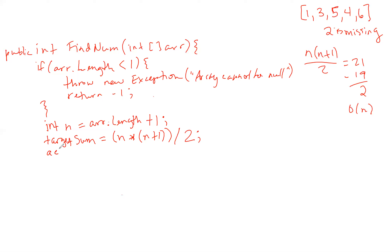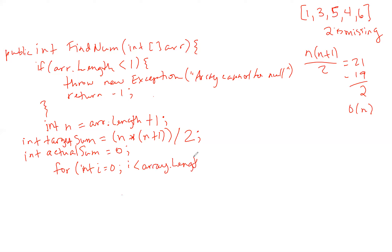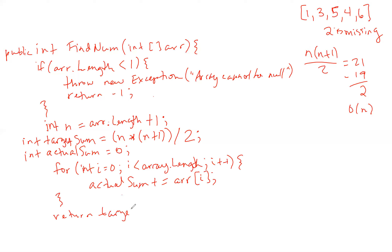Then we have an actual sum, and that's going to start at zero. We go into our for loop — for i less than array.length, i plus plus — and all we need to do is total up our actual sum by doing actual sum plus equals array at i.